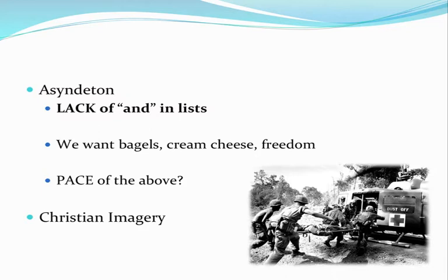That is asyndeton. The last new element is the idea of Christian imagery — do we see any allusions made to Christian symbols, Christian characters, or situations? And if we see these allusions, how do they tie into Tim O'Brien's revelation of theme? These are going to be the new things we'll be studying along the way. We'll have some readings, examples, and smaller practice items within our reading of The Things They Carried, but these are definitely new things we want to keep an eye on.